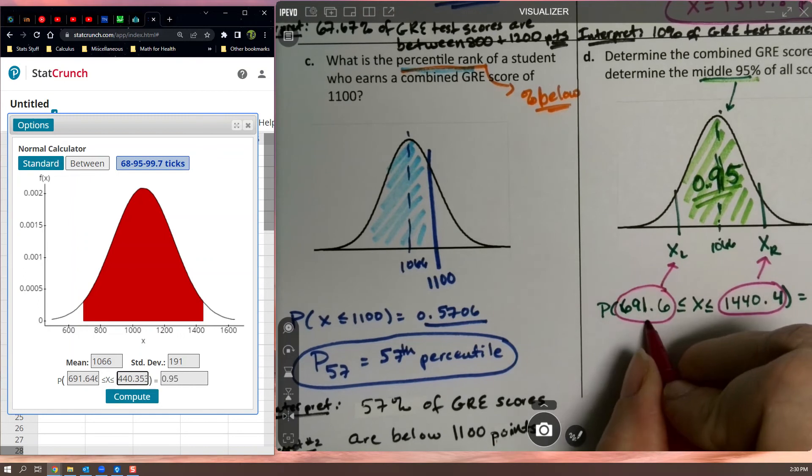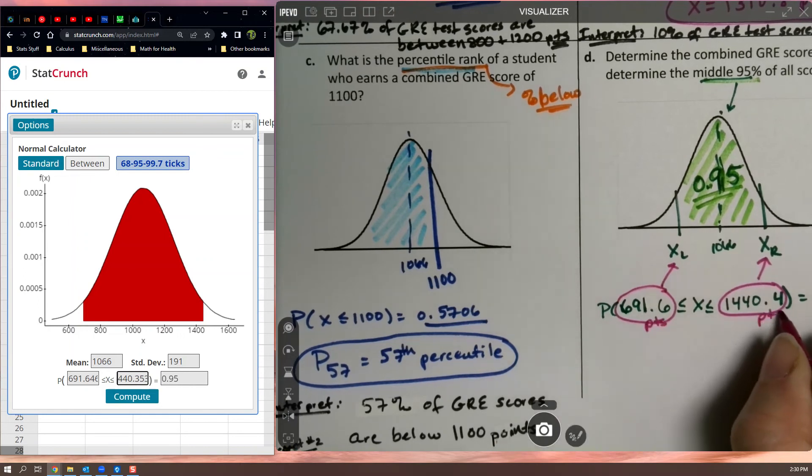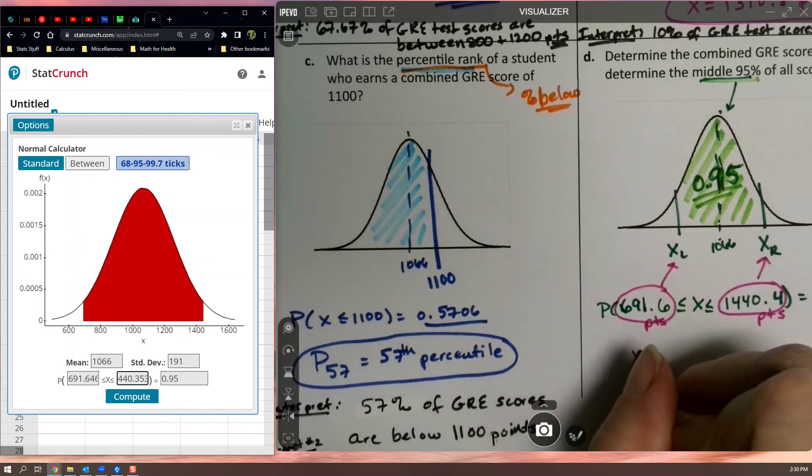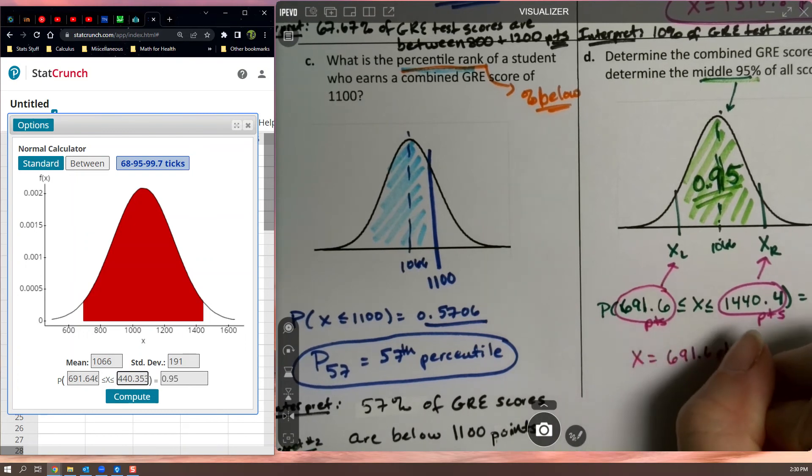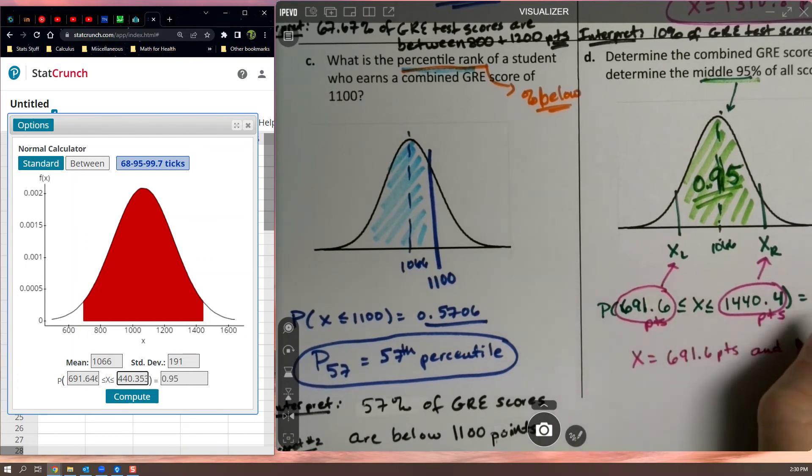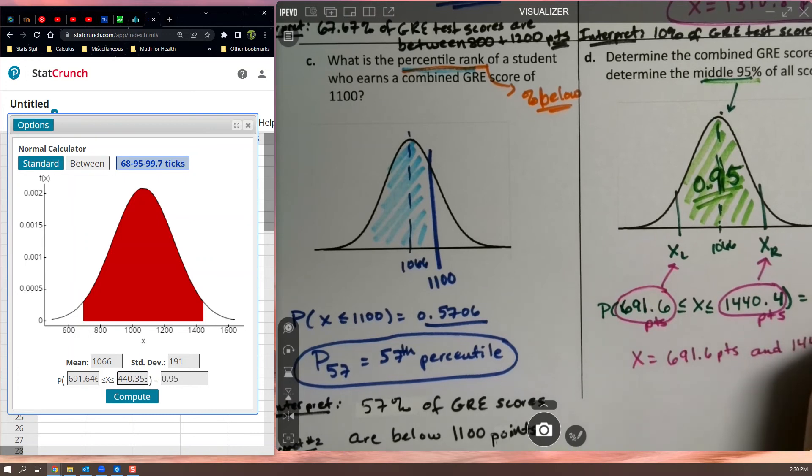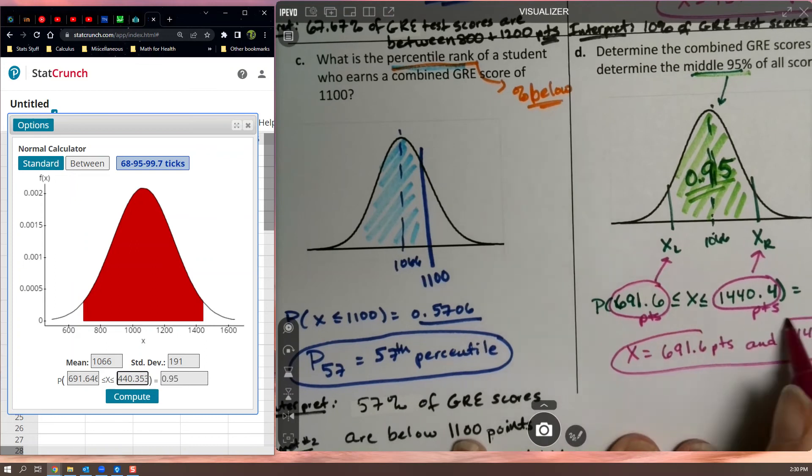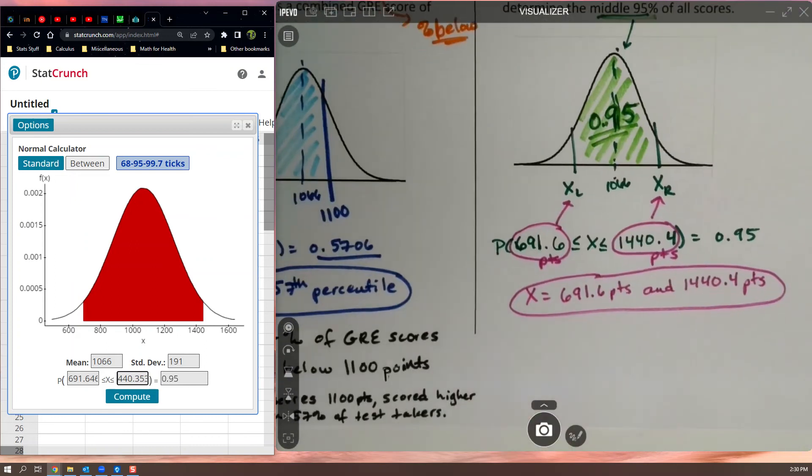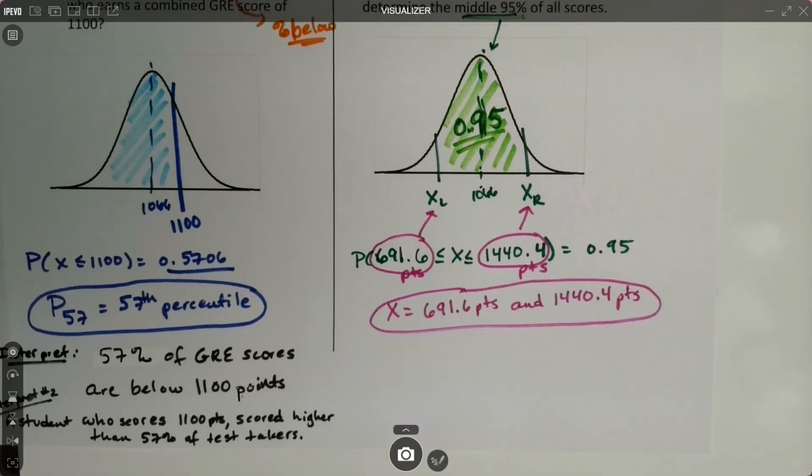So the scores that are actually the answers is this one right here and this one right here. And both of them would be points. They both are units. So the X values are 691.6 points and 1440.4 points. There's your answer. There's two answers there.